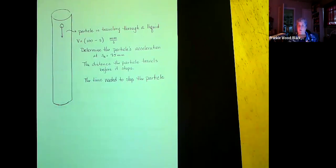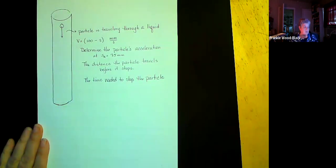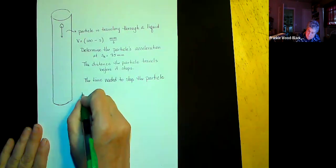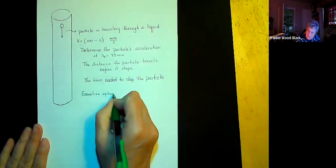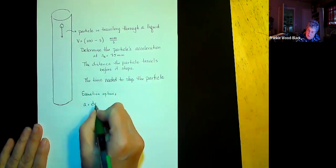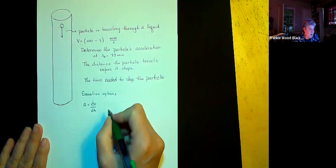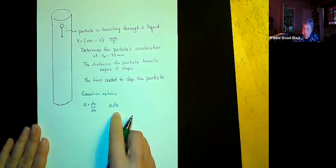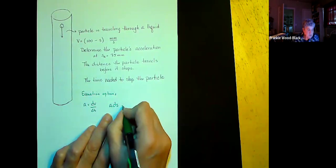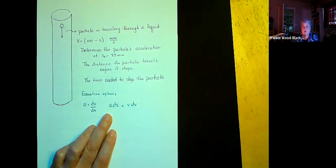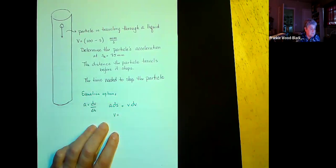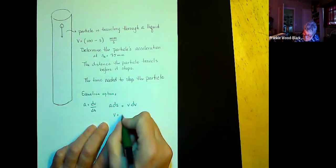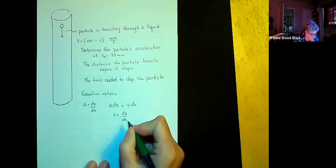When we were doing these problems before, we would look at our kinematic equations, but now it makes more sense to look at them slightly differently. The kinematic equations we want to consider are: acceleration equals the derivative of velocity with respect to time; acceleration times the differential in position equals velocity times the differential of velocity (a·ds = v·dv); and velocity equals ds/dt.